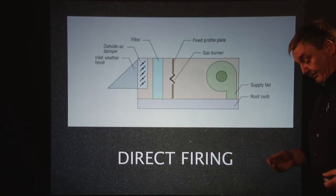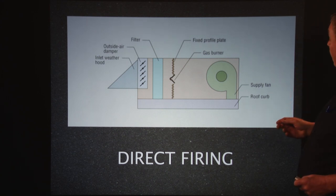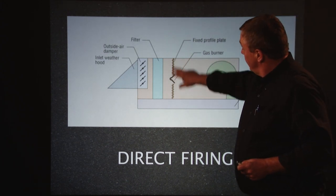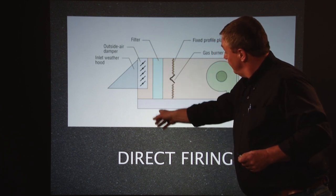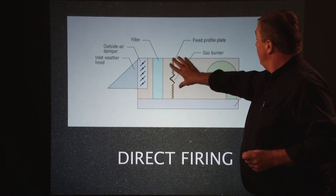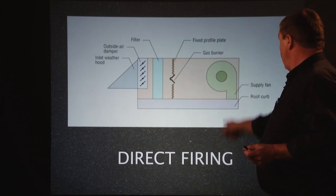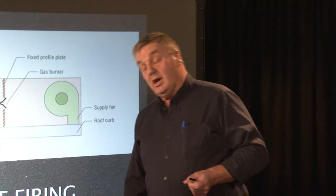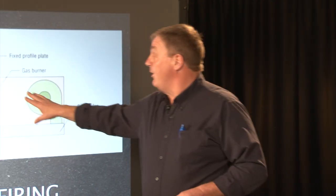They'll talk to you about maybe a direct firing unit. What a direct firing unit is: you'll have a heat burner here, the inlet hood through a damper, a filter, your gas burner, and basically it just burns into the air. The air is sucked across the burner, down through the supply fan, and then through a roof curb down into the ducting or directly down through a vent into an area. That's defined as direct fire.